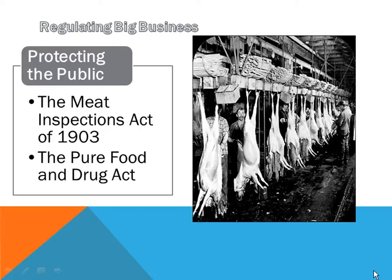Something else that is going to spin off from that is some regulations of big business coming into effect from other pieces of legislation. This is known as the progressive movement, the progressive era. People are starting to become aware of some of the abuses that are occurring in society. One of the abuses they feel has to deal with the processing of our food.